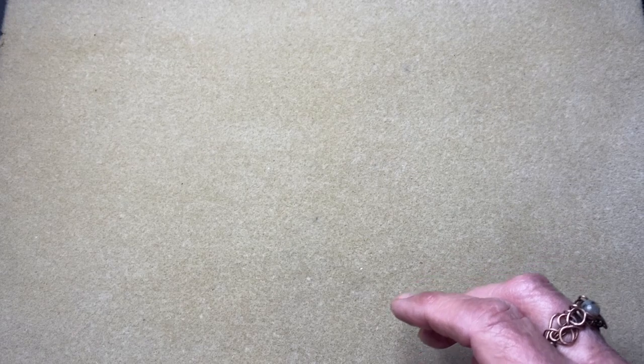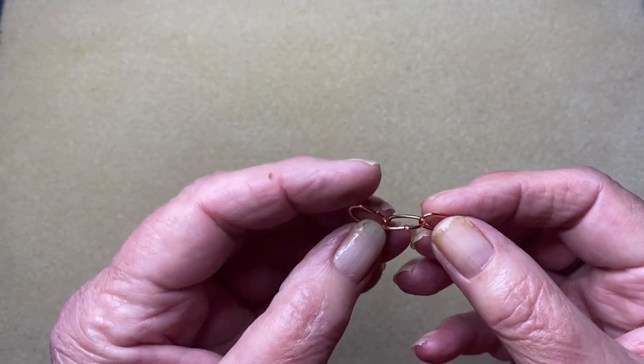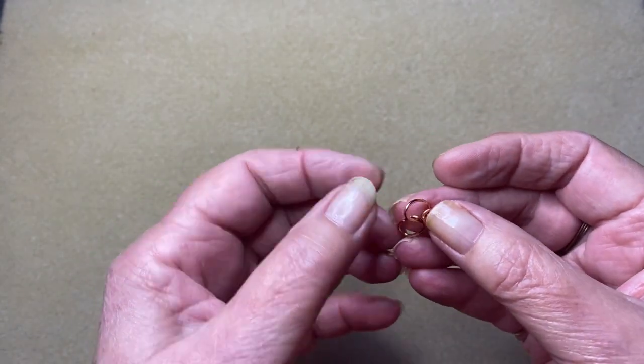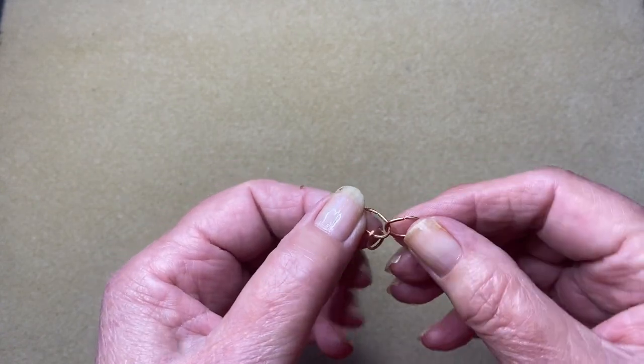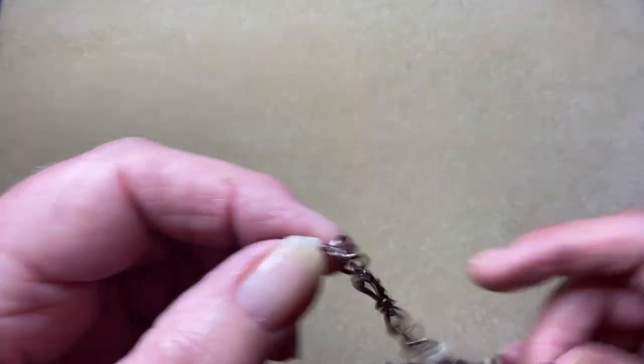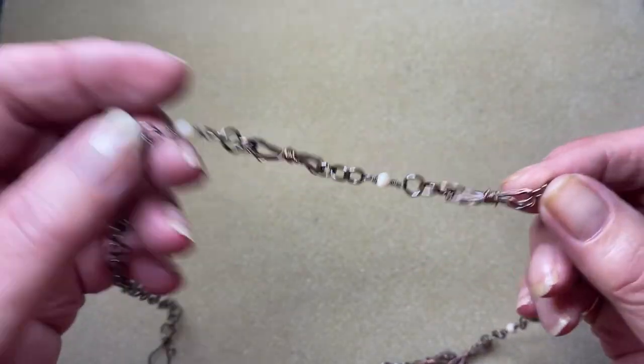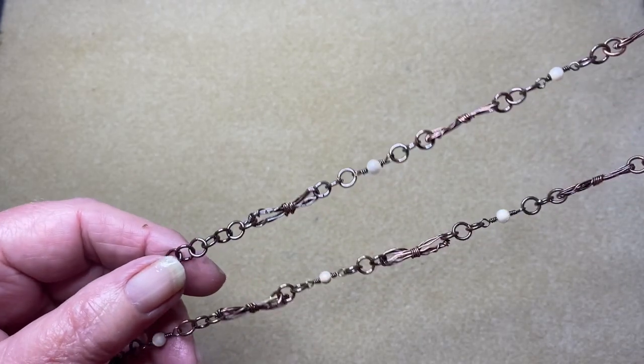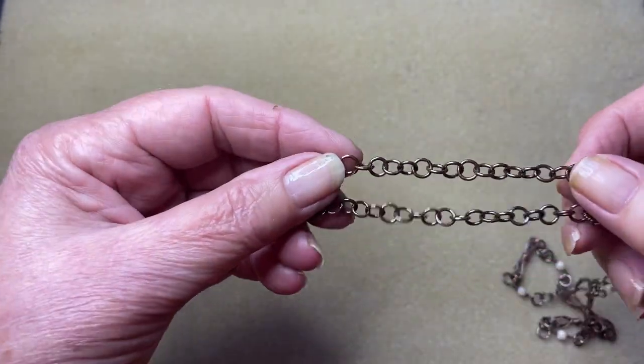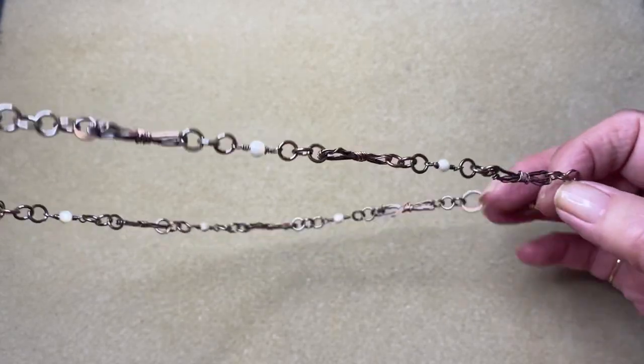I've also done just a couple of links here to show you in the 22 gauge, just to give it a little bit of a thicker look. And I've done just one link in 20 gauge. Obviously that's a little bit harder to wrap than the 22 and the 24, but still it's got a very effective look to it. The next link that we'll be doing is an oval link. This one I've hammered with the ball peen part of my hammer to give it little indentations.